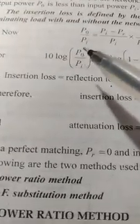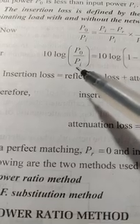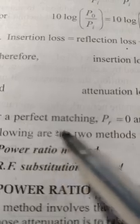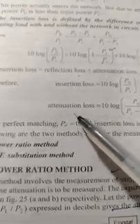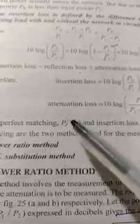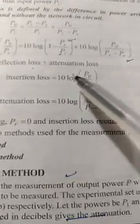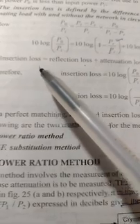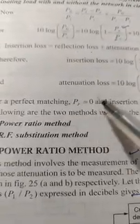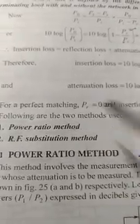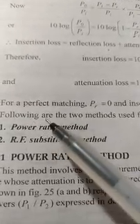For perfect matching conditions, if there is no reflection — that is Pr is zero — then insertion loss should be equal to attenuation loss. So under perfectly matched conditions, insertion loss equals attenuation loss. There are two methods used for measurement of attenuation: one is the power ratio method and another is the RF substitution method.